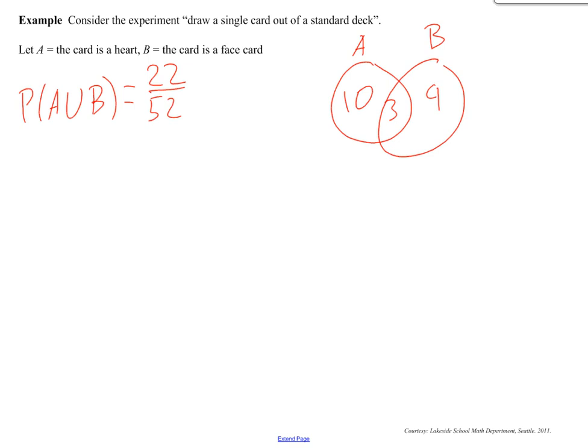Now, remember, union is A or B. That's what it really says. So, you just do basic math. You do 10 plus 3 plus 9. That gives you 22. We all know that there are 52 cards in the standard deck. So, that would be your probability.